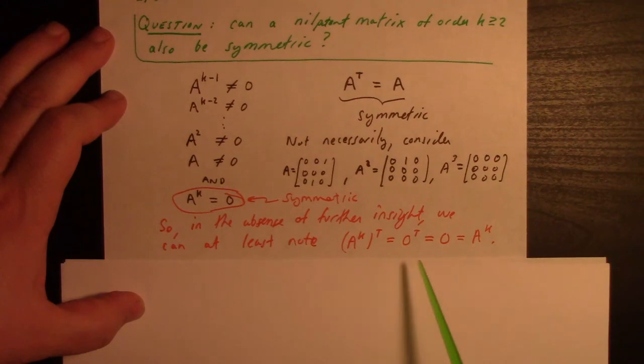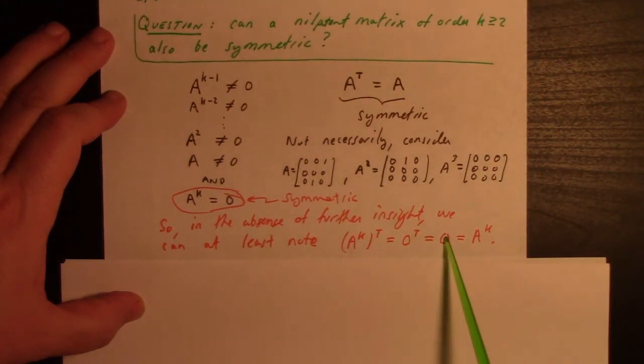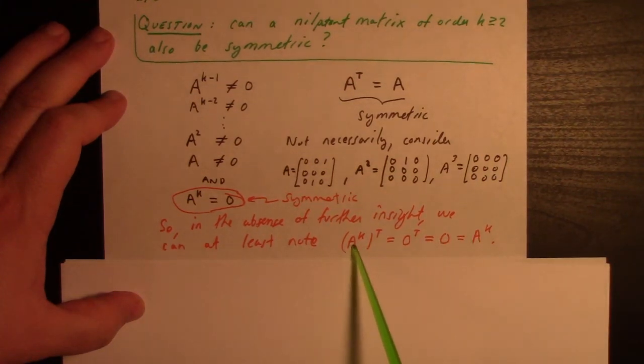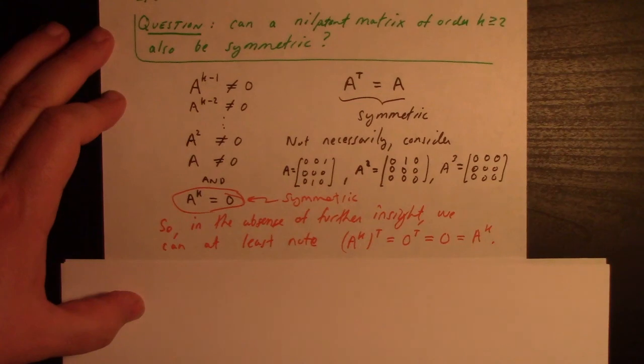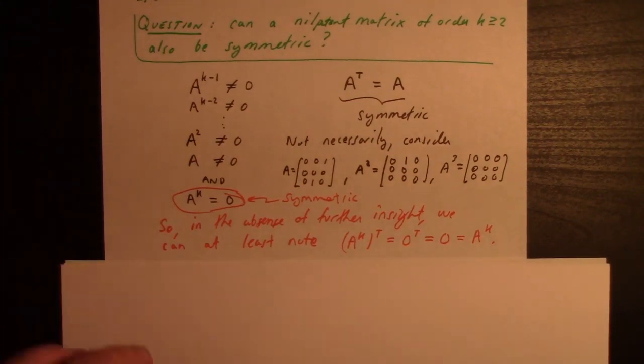In the absence of further insight, we can note that the kth power transposes to zero. So A to the k equals A to the k transpose, which is to say that A to the k is a symmetric matrix. Again, I don't know about these in general without further data. Thanks, hope this helps.